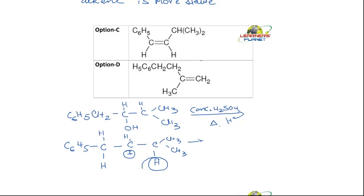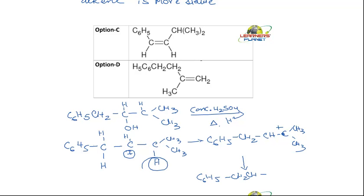Now if we remove this hydrogen, there would be C₆H₅-CH₂-CH₂ and there is the carbocation C⁺ with CH₃ and CH₃. So where will the double bond be formed? It will be C₆H₅-CH₂-CH=C(CH₃)₂. So this is the compound which is formed.